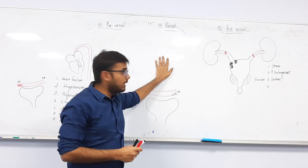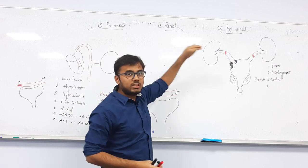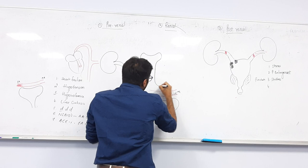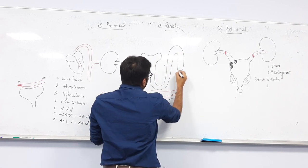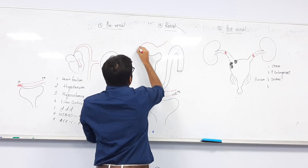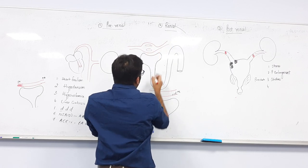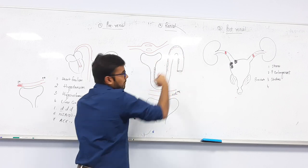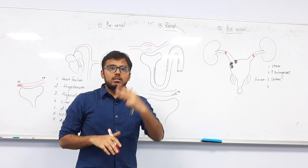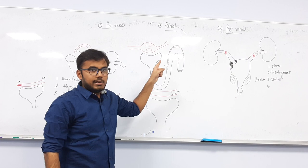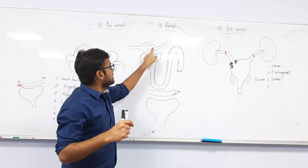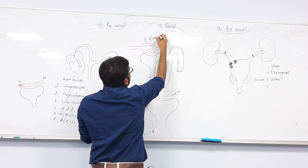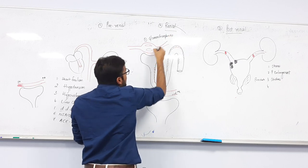Coming to renal (intrinsic) failure — the damage is within the kidney itself. In the nephron, there is the glomerulus and tubular cells throughout the kidney. The first type of intrinsic damage is to the glomerulus: infection or inflammation of the glomerulus is called glomerulonephritis.